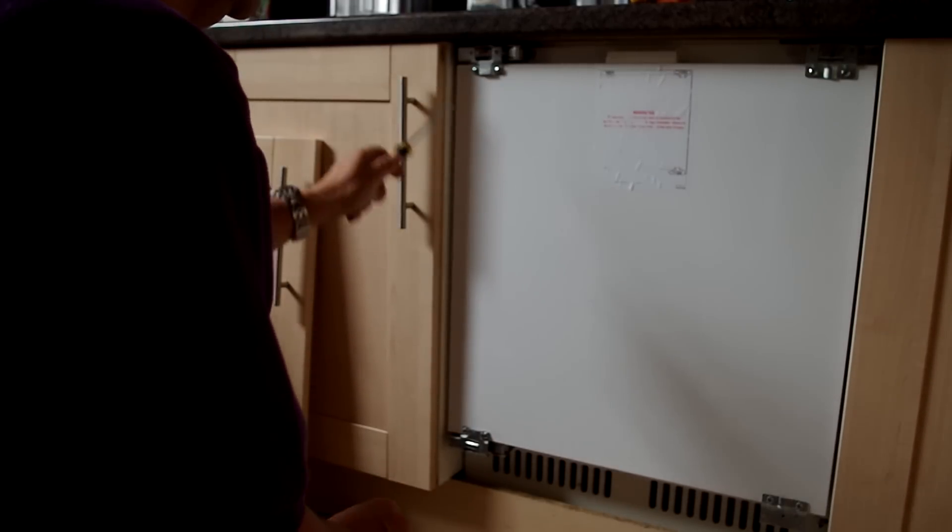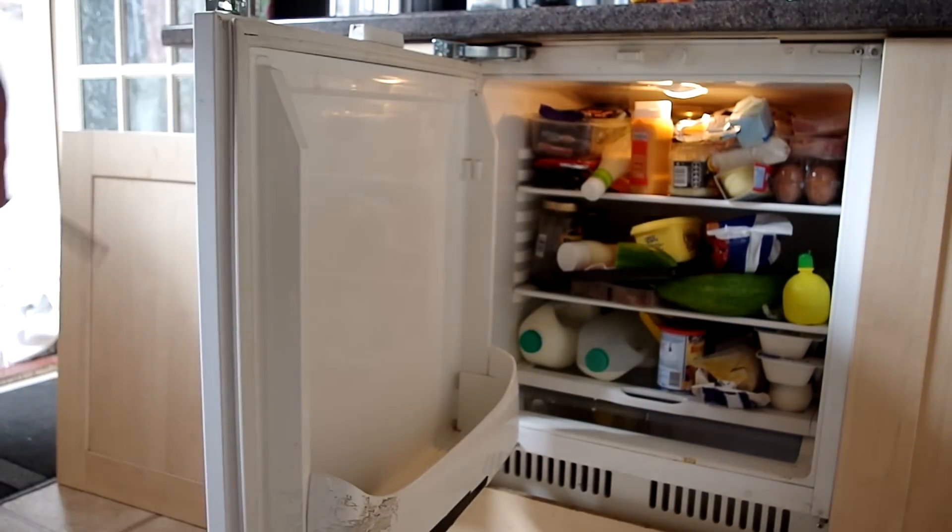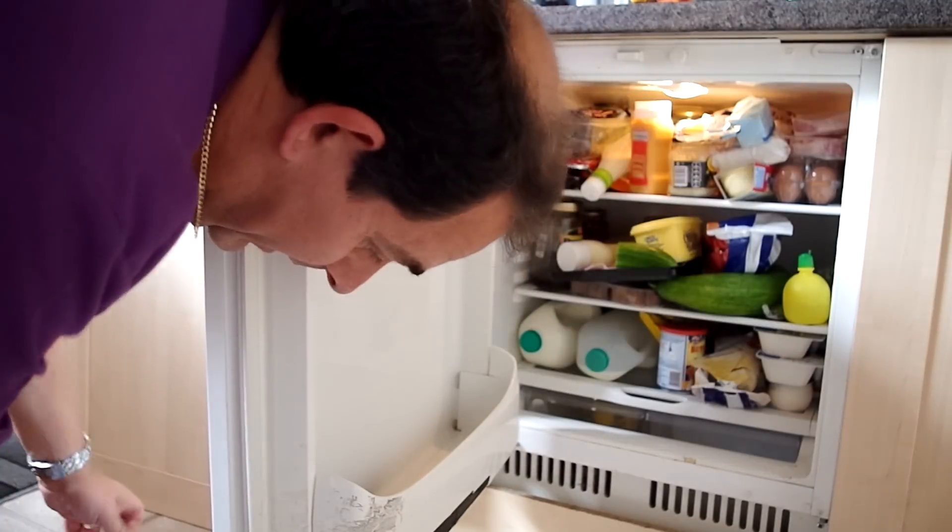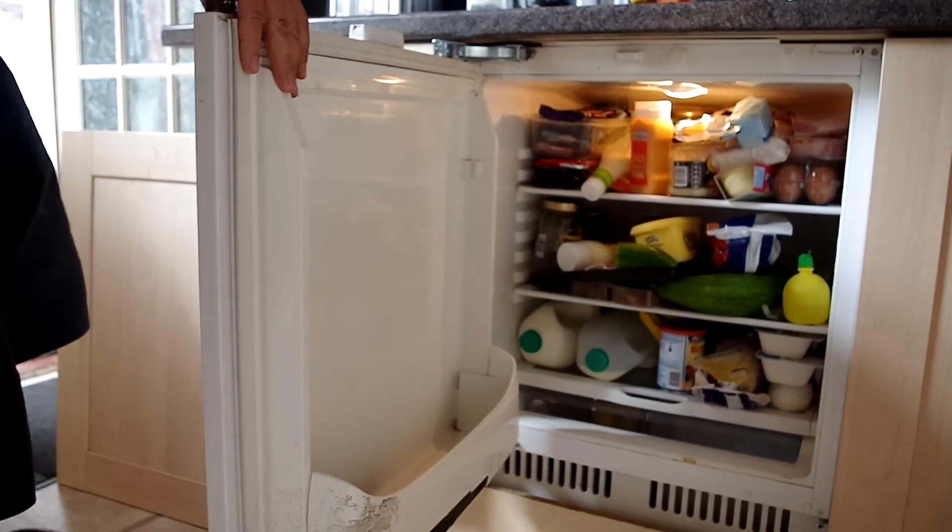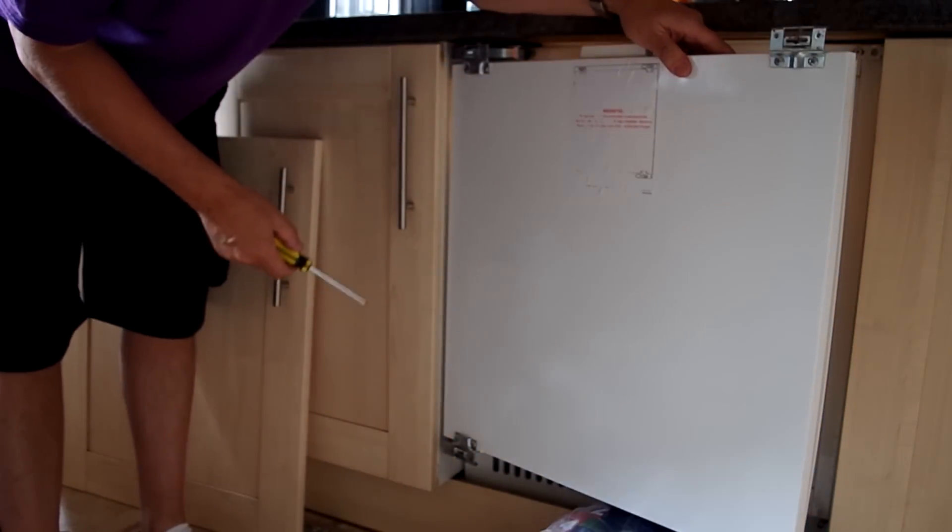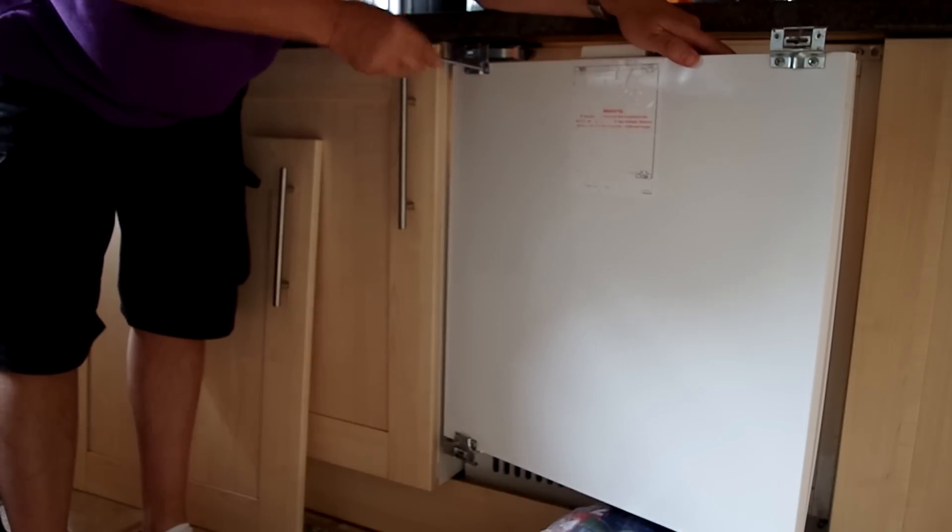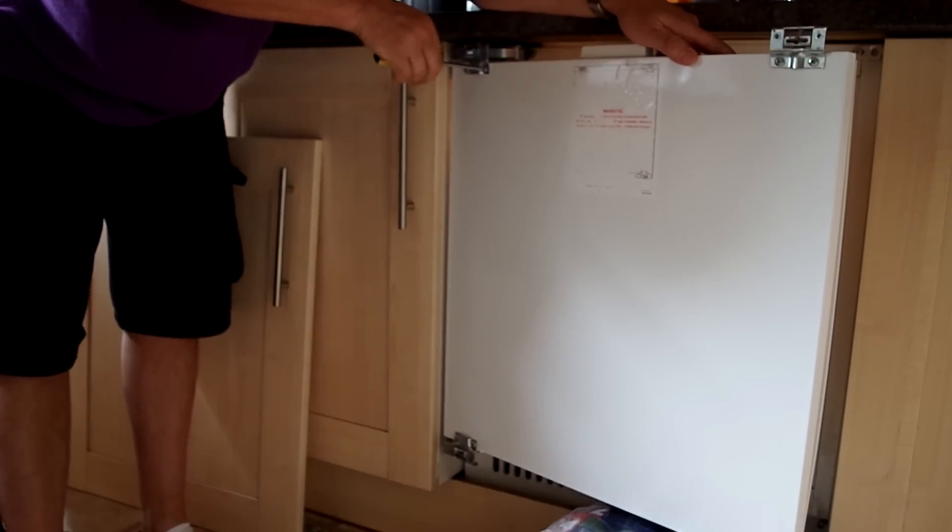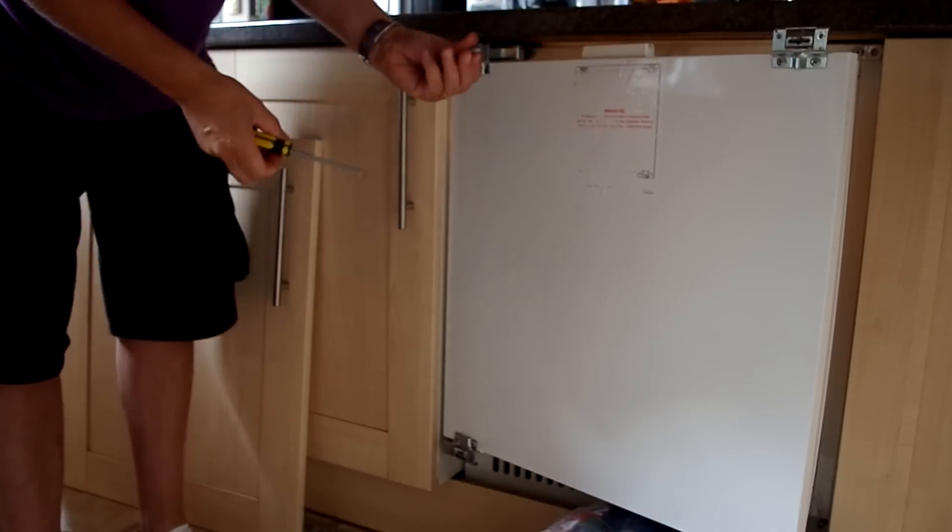What we do is open that and support the door. I've got some tins of dog food here, but you can support the door with something whilst you're doing it rather than strain the hinge. We need to simply take the door off. That's supported under the tins. I'll unscrew these like so. They're quite thick, chunky screws on this one.